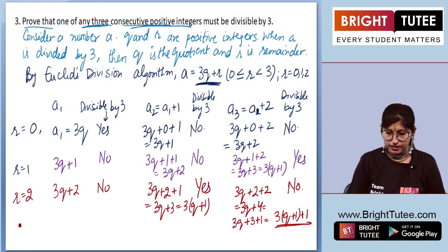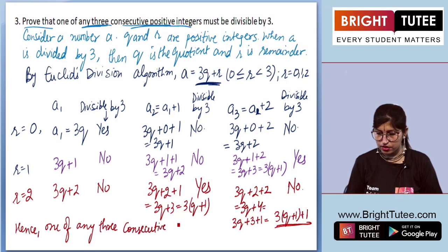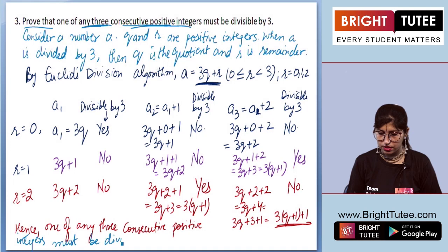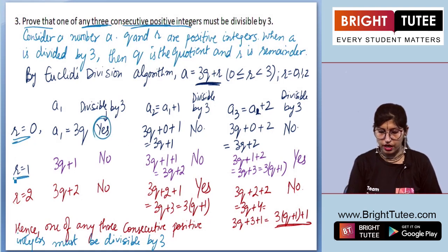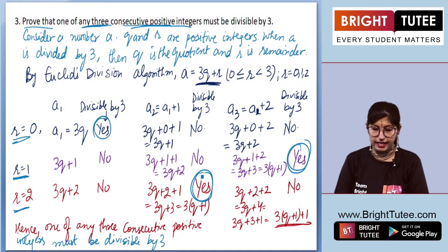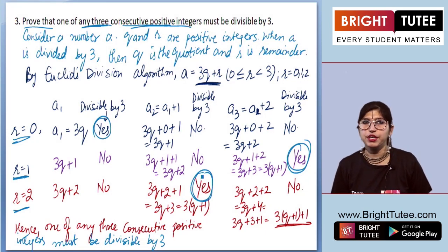Hence, we come to the conclusion that one of any three consecutive positive integers must be divisible by 3. When r equals 0, a1 is divisible; when r equals 1, a3 is divisible; when r equals 2, a2 is divisible. So for all possible values of r — 0, 1, and 2 — one of the three consecutive positive integers must be divisible by 3. Thank you so much.